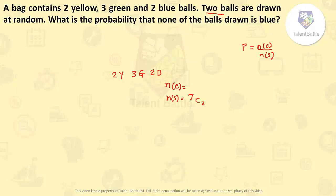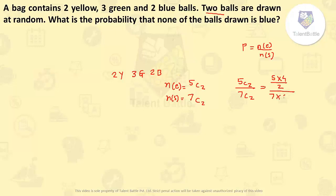We need to calculate the number of favorable events. They want the probability that none of the balls drawn is blue. There are 2 yellow and 3 green — 5 balls which are not blue. Out of those we draw 2, so the event is 5C2. Probability = 5C2 / 7C2 = (5×4/2) / (7×6/2) = 20/42 = 10/21. The correct answer is 10/21.